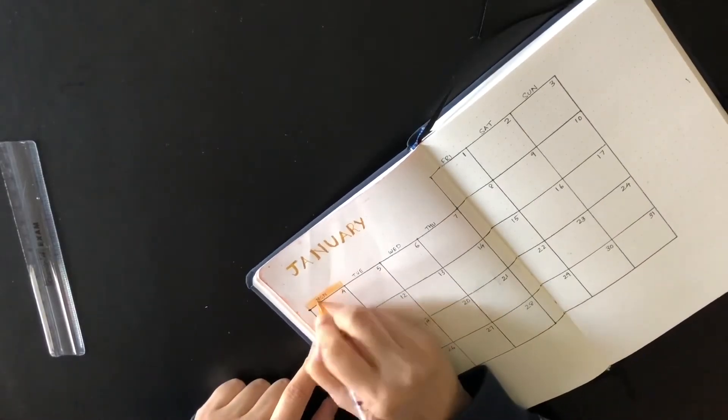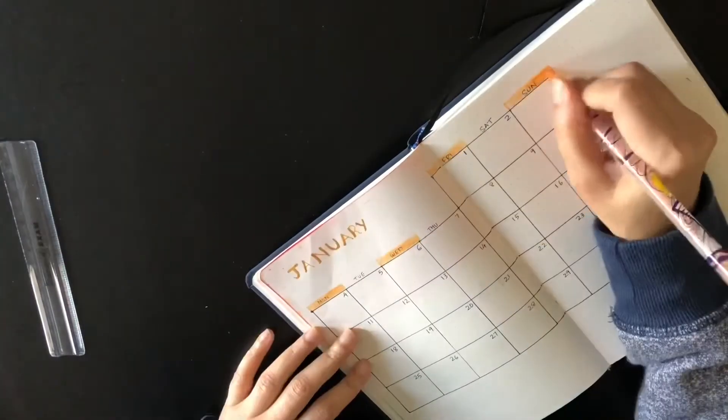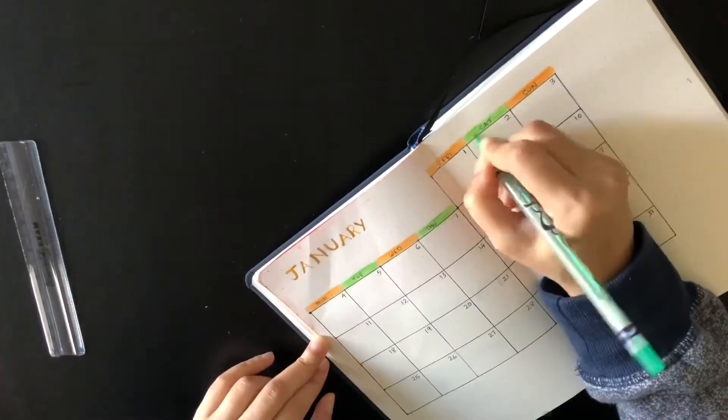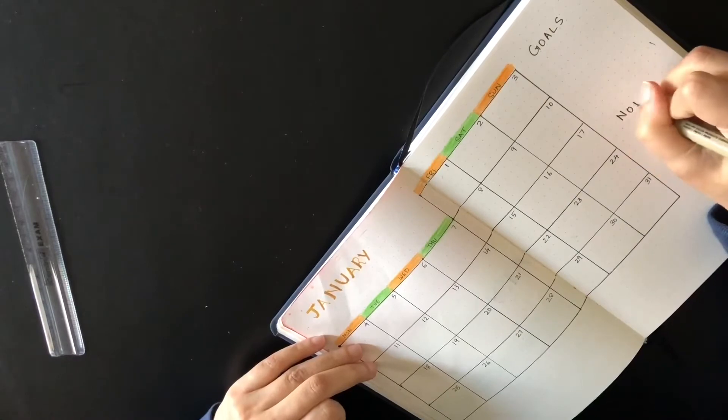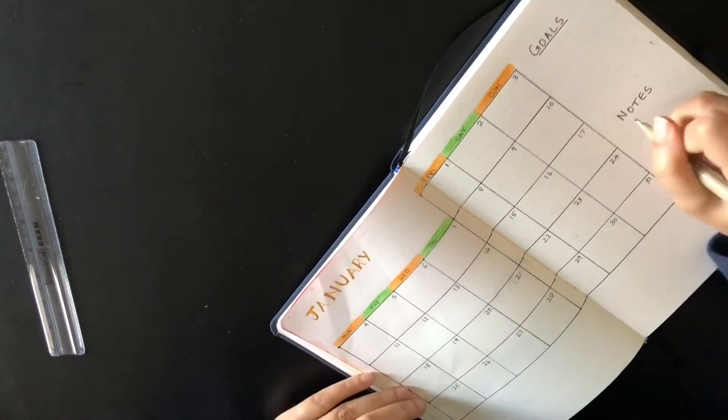I'm highlighting the days of the week in orange and green. On the right side, I'm going to list my monthly goals and give some space to write any notes.